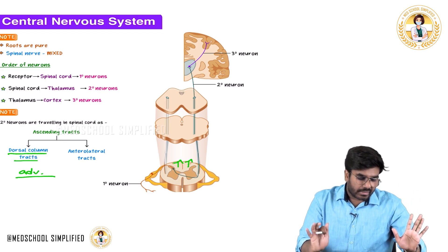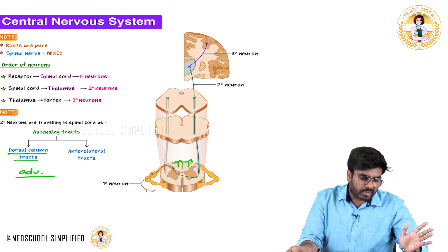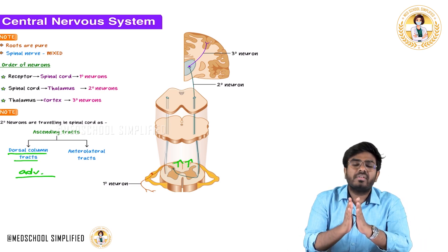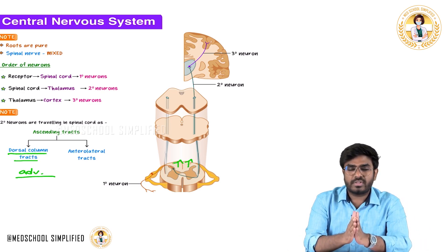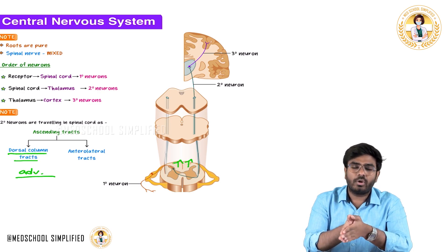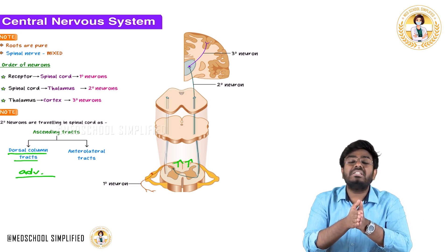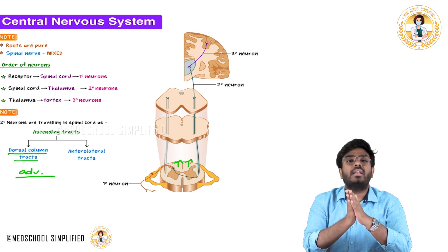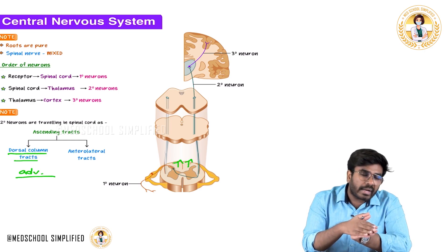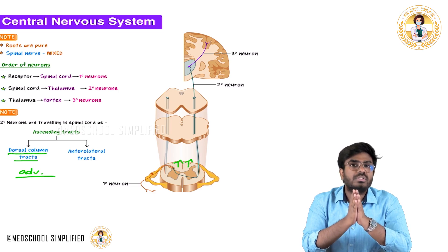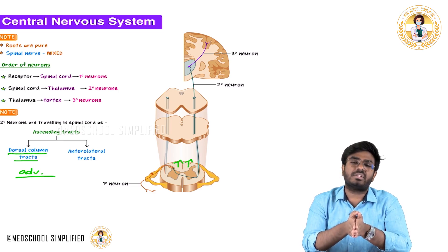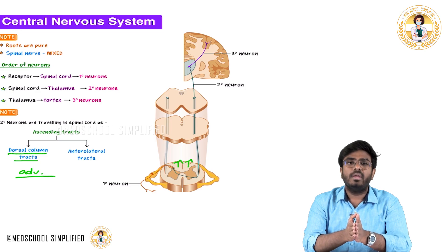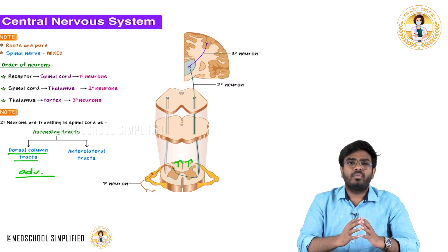In this video, we discussed the classification of sensations, the order of neurons — first-order, second-order, and third-order — and the classification of ascending tracts. Ascending tracts are mainly classified into dorsal column tracts, which carry advanced sensations, and anterolateral tracts, which carry primitive sensations. Hope the video is helpful. Thank you.